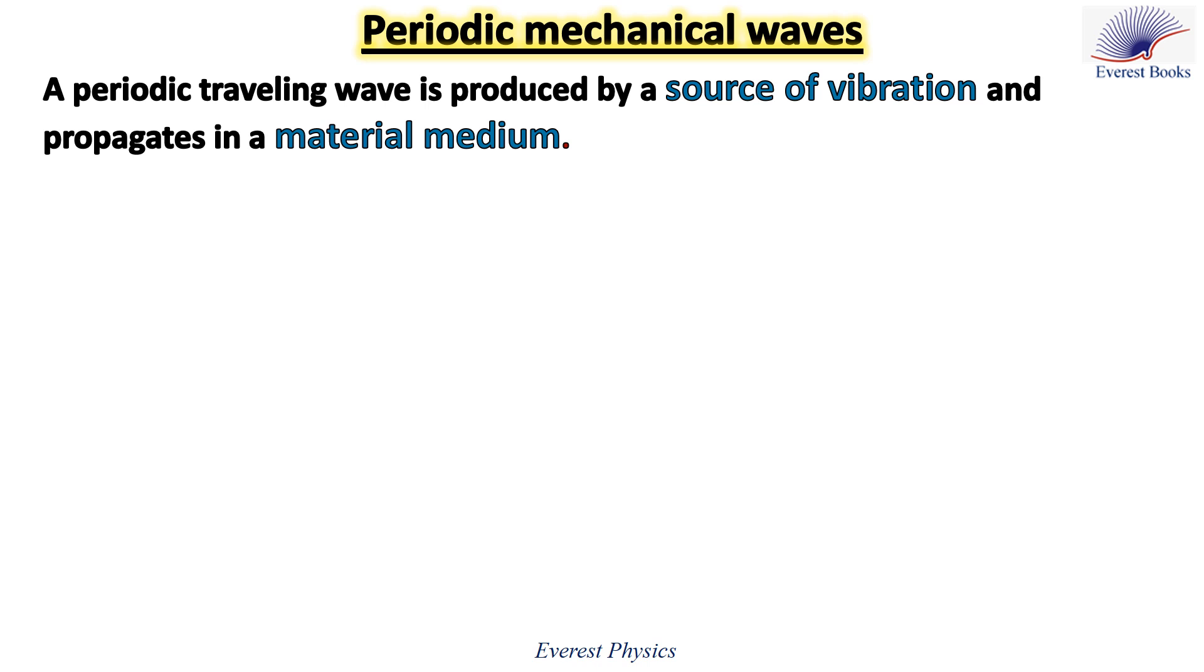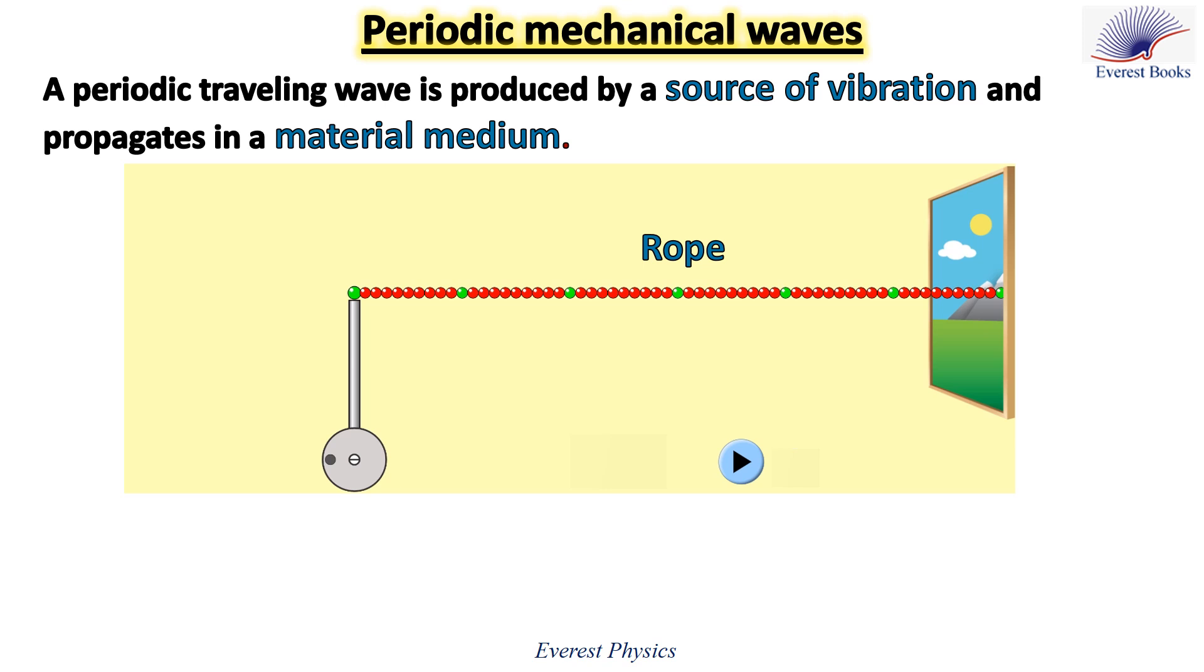A periodic traveling wave is produced by a source of vibration and propagates in a material medium. What do we mean by periodic traveling wave? If the traveling disturbance repeats itself regularly during a constant interval of time, the wave is called a periodic wave. In this PHET animation, the red and green balls represent the particles of a long rope connected from one of its end to a source of vibration. When the source does not vibrate, each particle remains at rest in its equilibrium position.